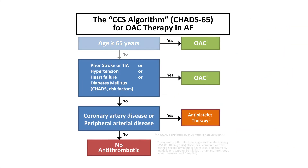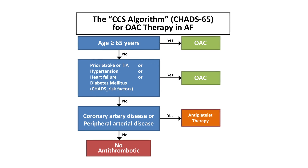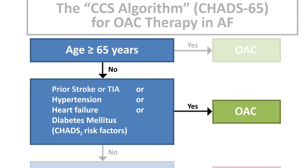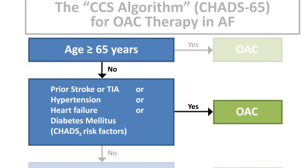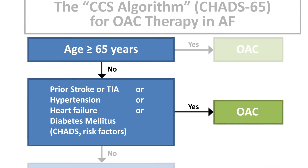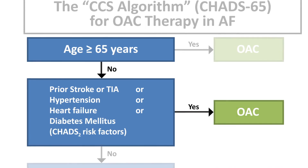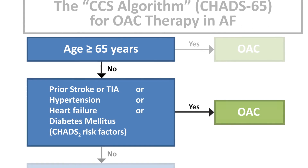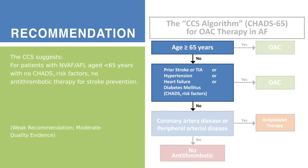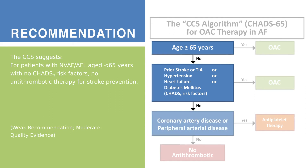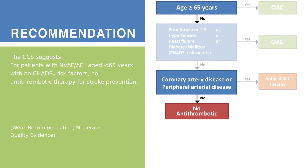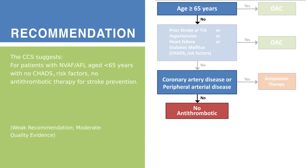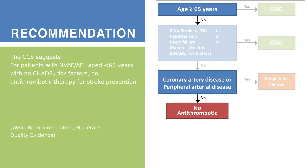For patients under the age of 65, consider the traditional CHADS-2 risk factors, which include prior stroke or transient ischemic attack, hypertension, heart failure, or diabetes. In the presence of any one of these risk factors, oral anticoagulation therapy is indicated. If a patient has none of the age or traditional CHADS-2 risk factors or vascular disease, then it is entirely appropriate to forego antithrombotic therapy. The CCS suggests no antithrombotic therapy for stroke prevention for patients less than 65 with no CHADS-2 risk factors.